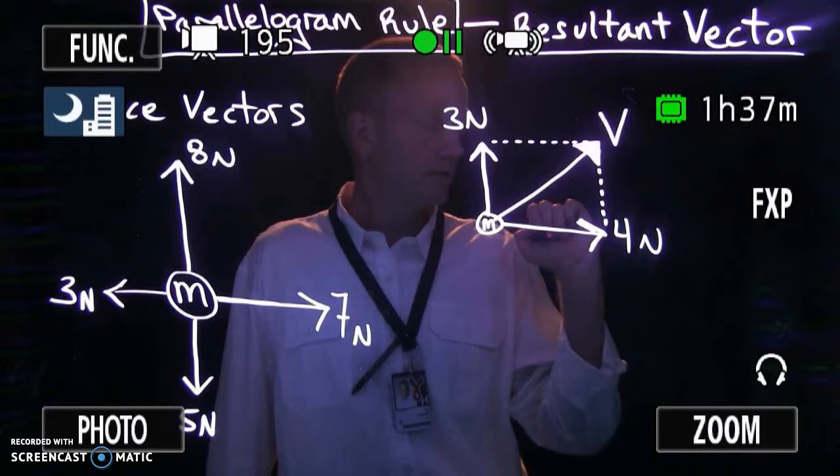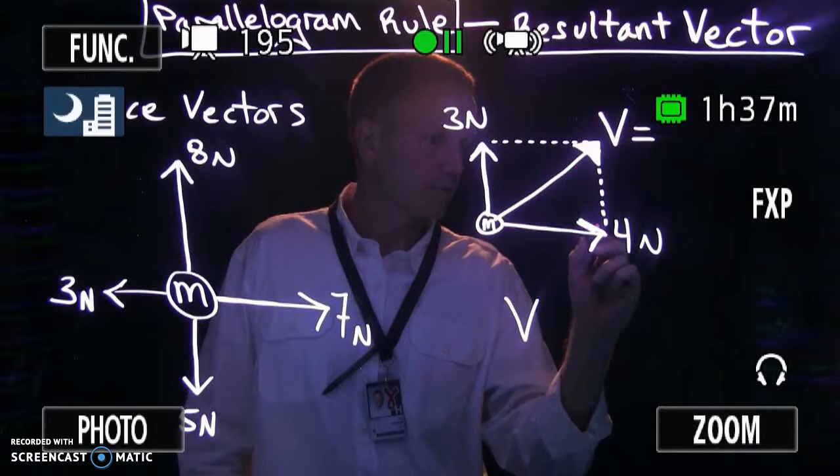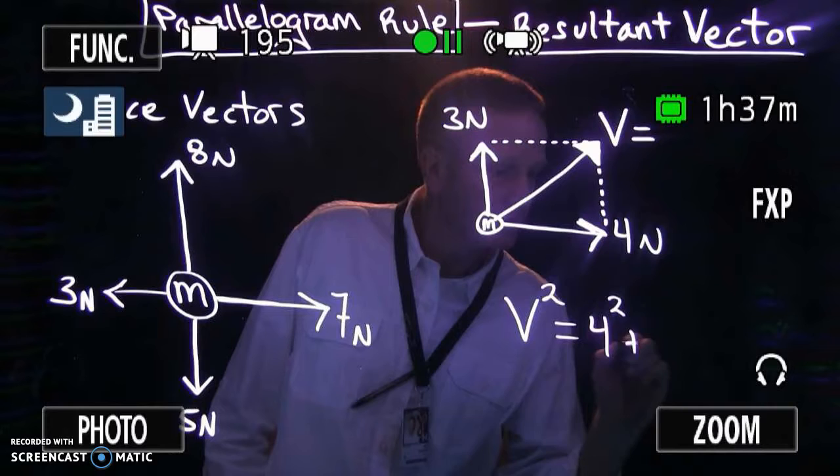And if you want to know how long that vector is, you have to apply the Pythagorean Theorem where you pick this as the hypotenuse of a right triangle. Therefore, the length of that hypotenuse squared equals the length of the other two vectors squared. We have 4 squared plus 3 squared.